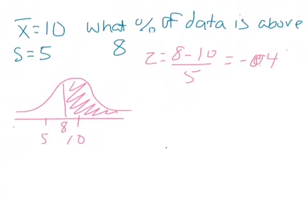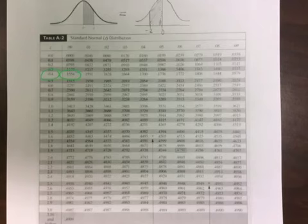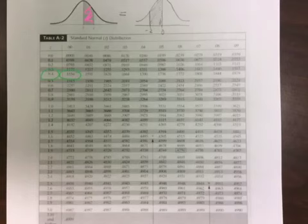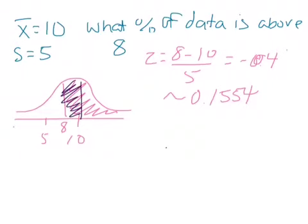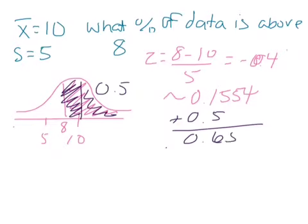The z-score for 8 is negative 0.4 — it's negative because it's below the mean. Now we look up 0.4 in the z-table. We can't find negative 0.4 directly, so we use 0.4, which tells us that about 15% of the data is between the mean and that point. The z-table value is 0.1554, meaning the area between 8 and the mean is 0.1554.